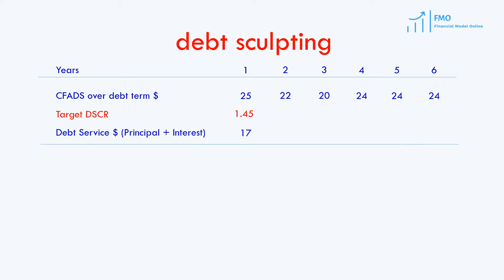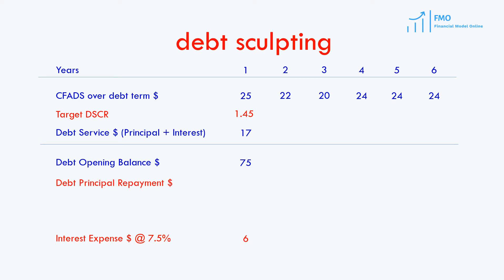Assume that our initial debt balance is 75, which carries an interest rate of 7.5%. The next step is to calculate the interest expense, which is the debt opening balance multiplied by the interest rate of 7.5%. Now we can subtract from the debt service the interest expense to get the debt principal repayment. And based on the debt opening balance and principal repayment, we get the debt closing balance in year 1, which is the debt opening balance in year 2. Please note that the numbers do not add up due to rounding.